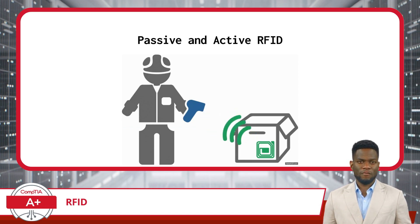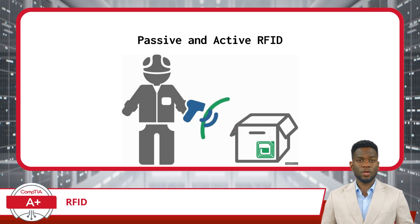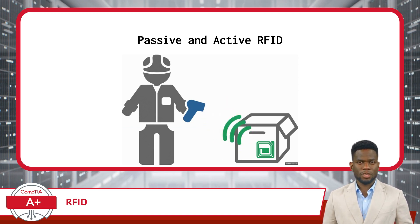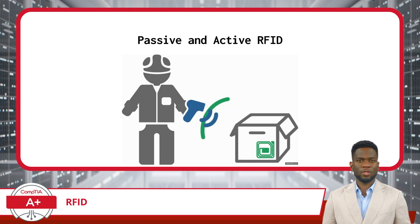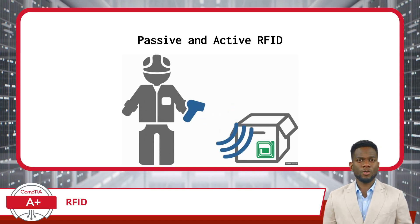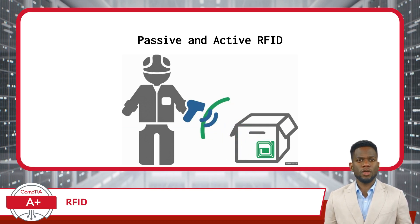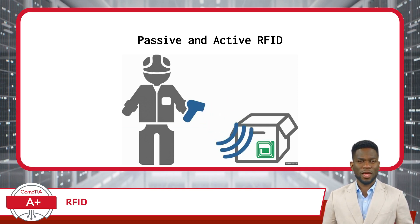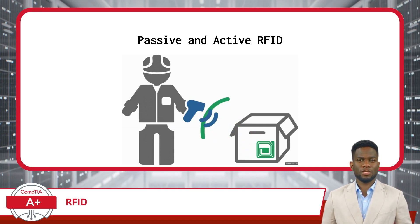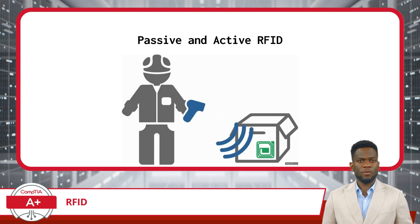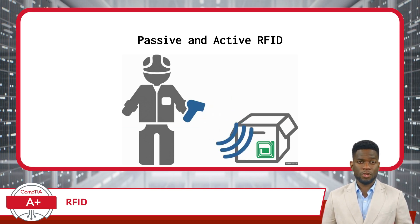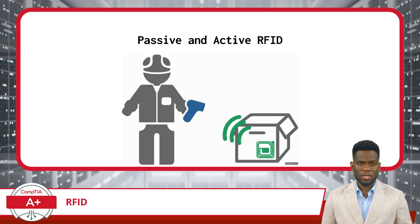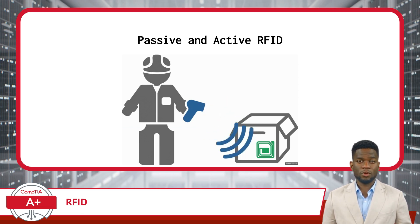Passive RFID systems consist of an RFID tag and reader, where the tag relies on the reader's energy in the form of electrical inductance to power and transmit its stored information. Active RFID systems, on the other hand, use battery-powered tags that actively send signals to the reader, allowing for longer ranges and continuous tracking.